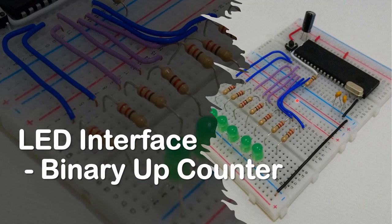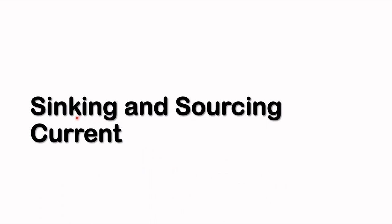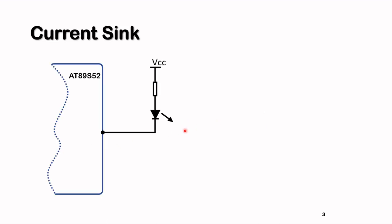So let's get started. There are two ways of connecting LEDs to a microcontroller: current sinking and current sourcing. Let's first take a look at current sinking. In this method, if I put a logic zero at the port pin, the LED will switch on or light up, because VCC is at a higher potential than the port pin, so current will flow. This method is used in the EdSim51 simulator.